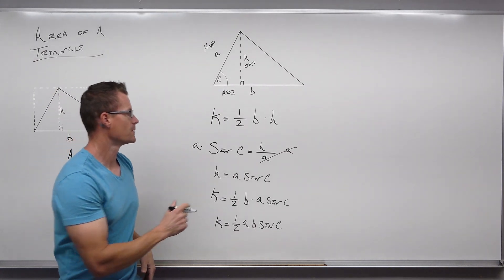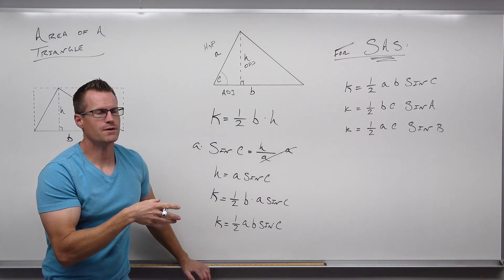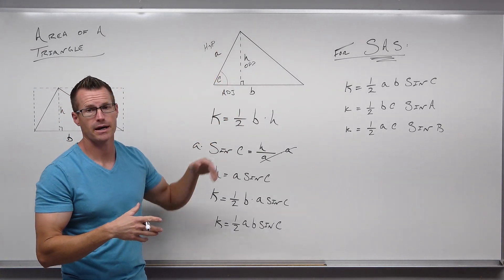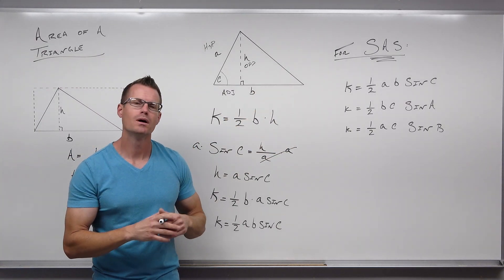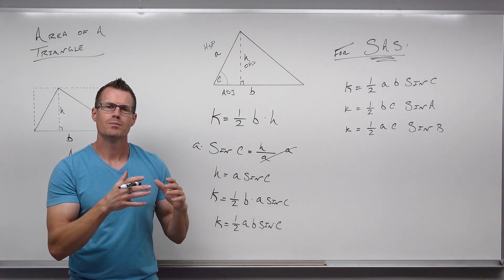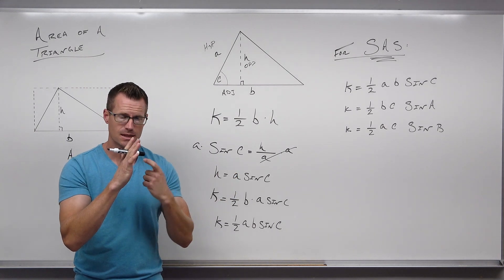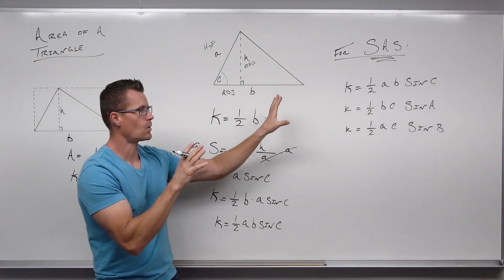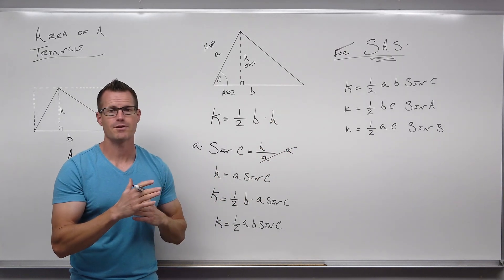There are our formulas. Remember, this only works if you know two sides with an angle between them — that's the only way to figure out the height with our sine function. This is for a side-angle-side knowledge of a triangle. The concept: area is one half times the sides, times sine of the angle between the sides you know. That's why you need two sides and the angle between — multiply the sides times sine of the angle between, take one half, and you have the area.